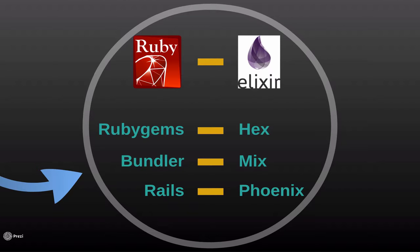In contrast, Elixir developers try to build smaller, more modular programs that are combined to make a web application. Phoenix is one piece of the puzzle and is more like a library of utilities than a framework like Rails.